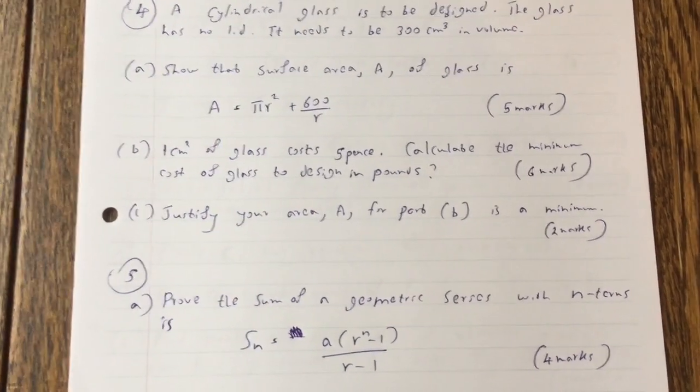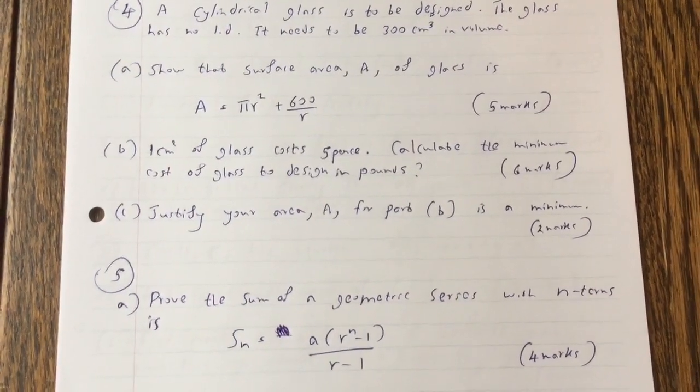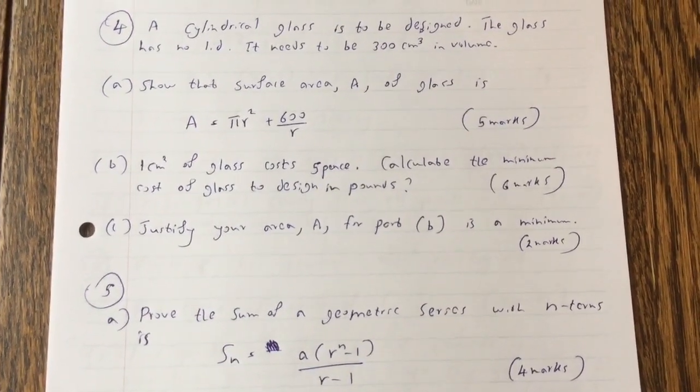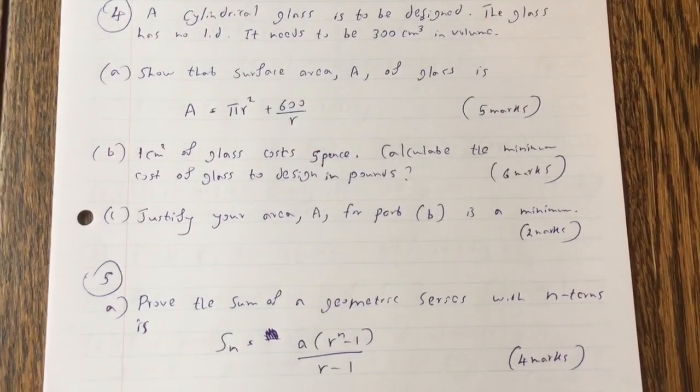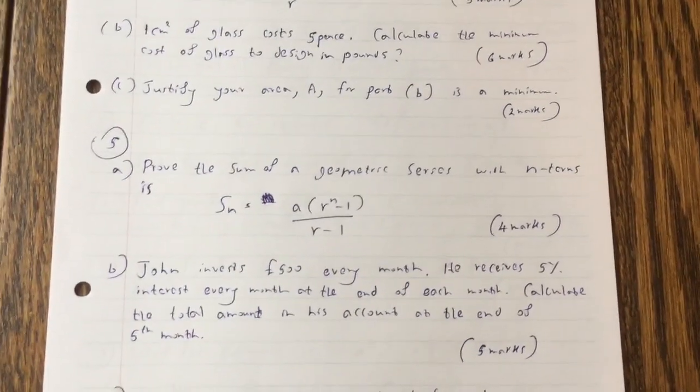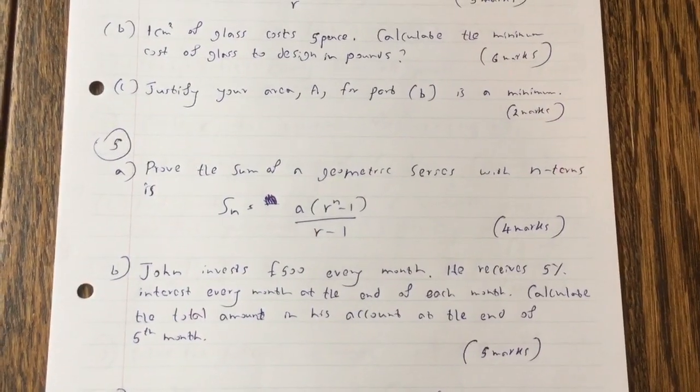1 square centimeter of glass costs 5 pence. Calculate the minimum cost of glass to design in pounds. Justify your area A for part B is a minimum.